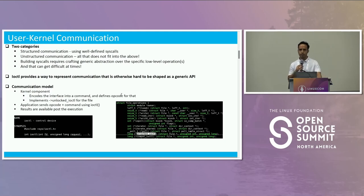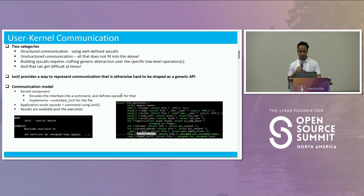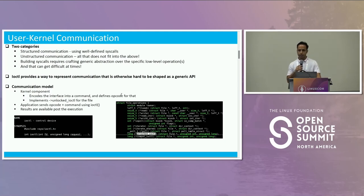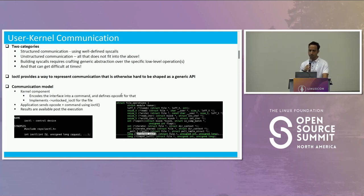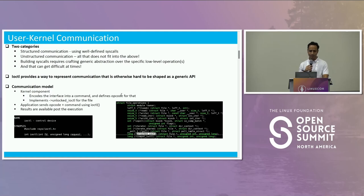IOCTL has been used as a way to represent communication that is otherwise hard to be shaped as a generic API. People like it for some reasons and dislike it for others. But maybe that's not what we're going to talk about today.